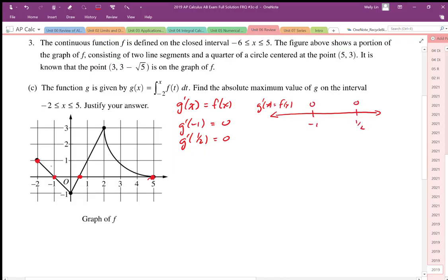If we take a look at our slope charts here, on the left hand side of negative 1 we know that the y coordinates are positive, that means the slope of the function is positive in this region here.